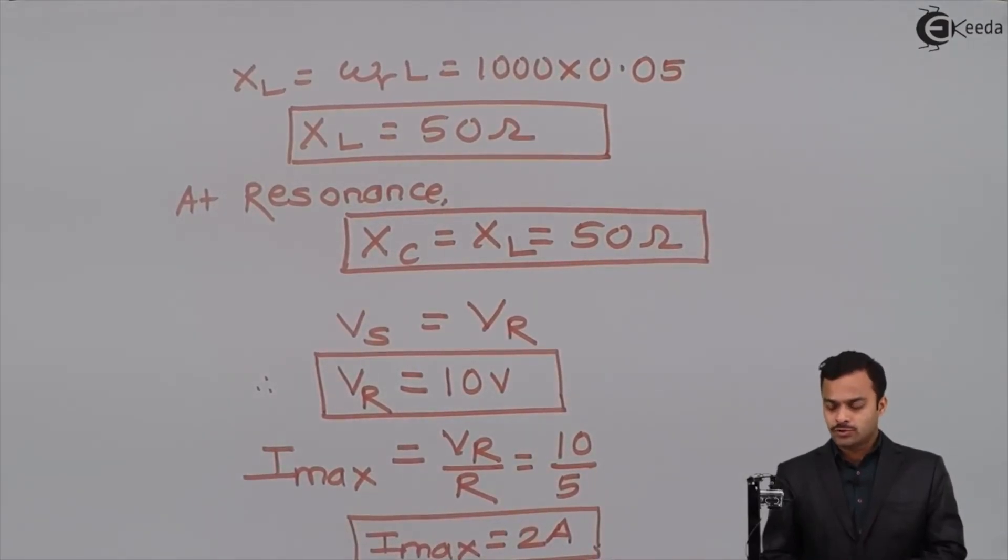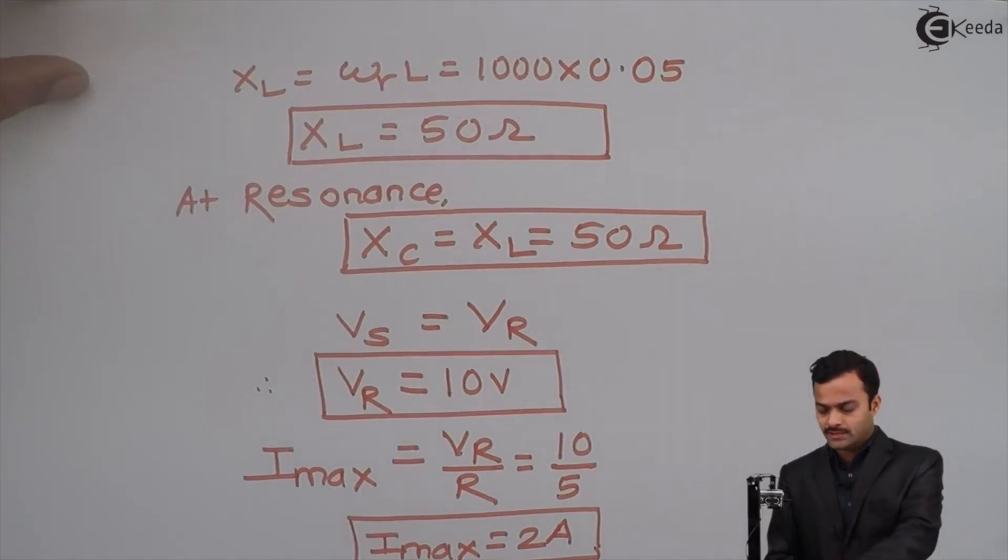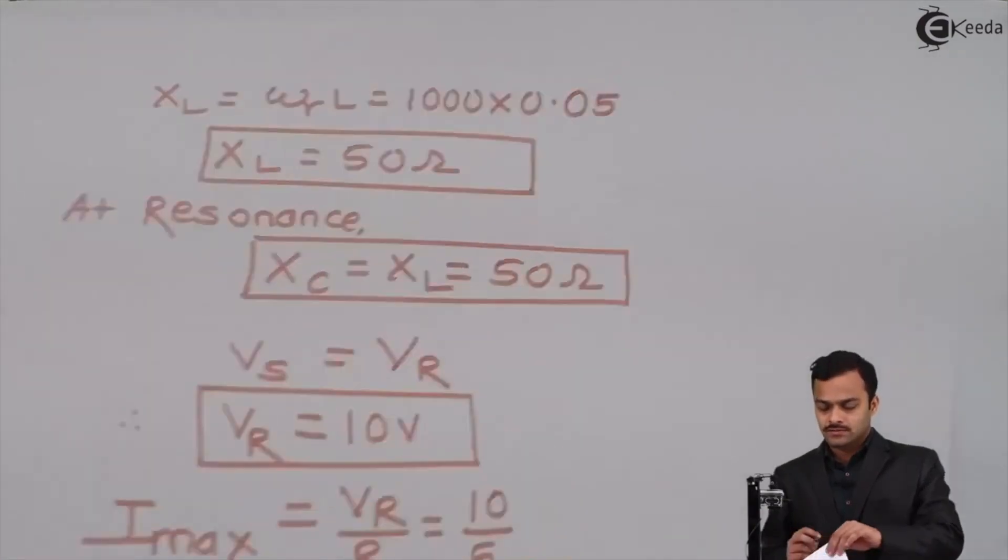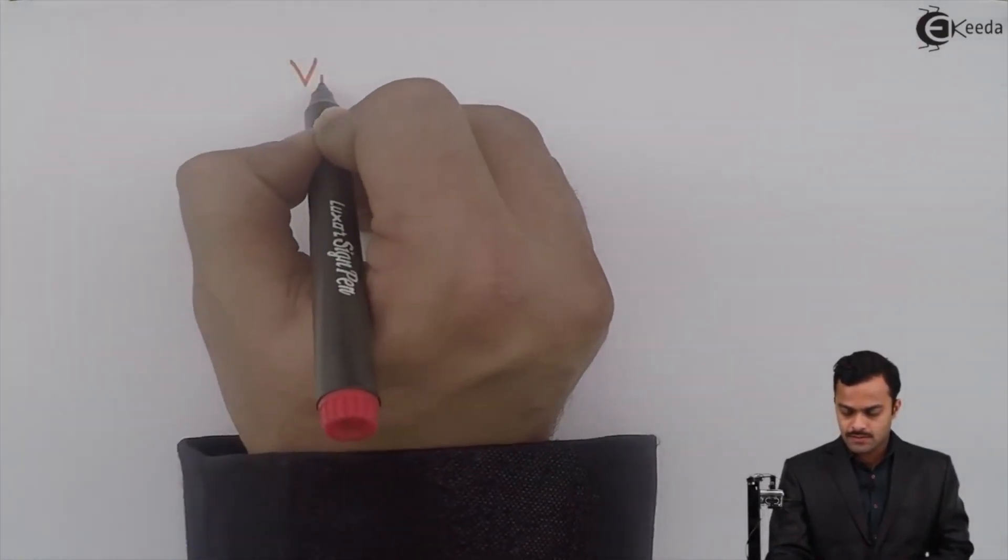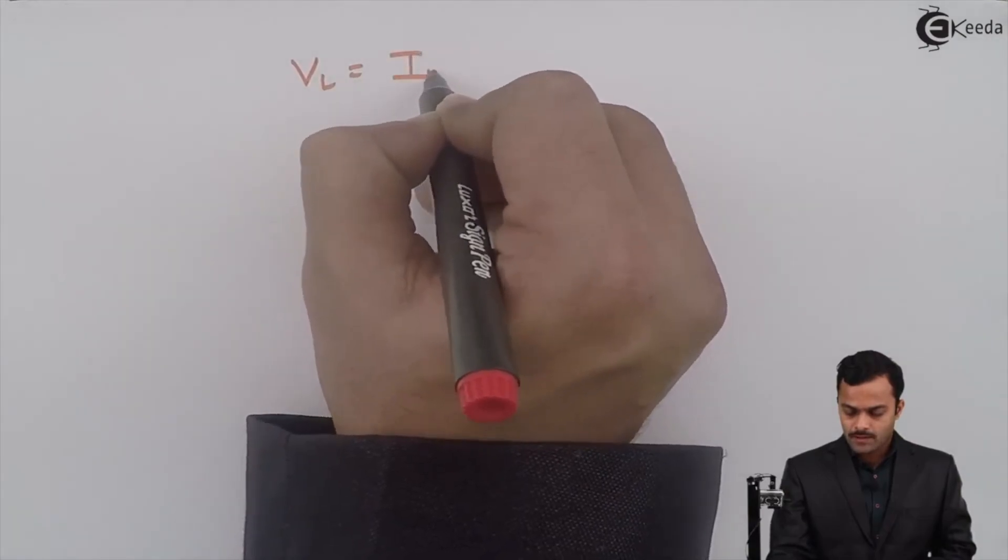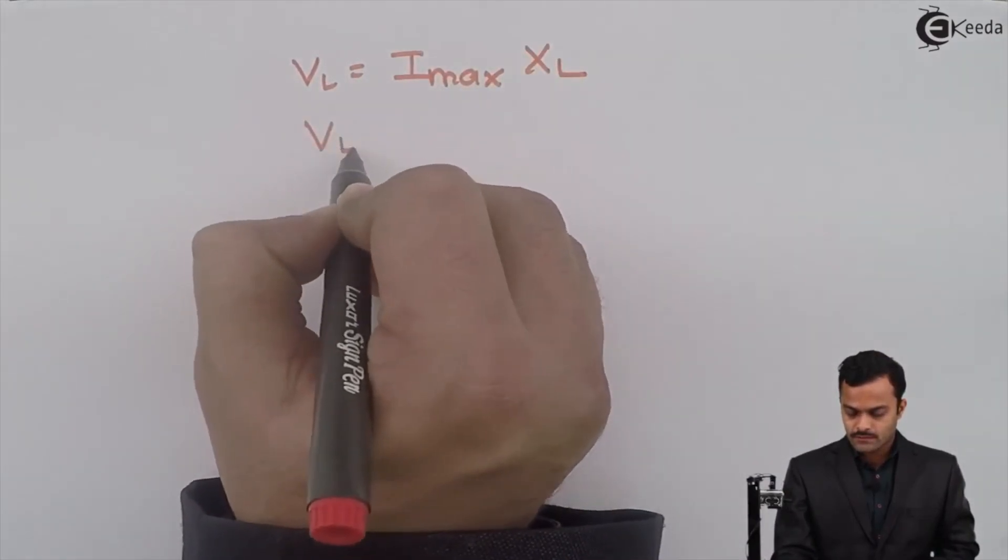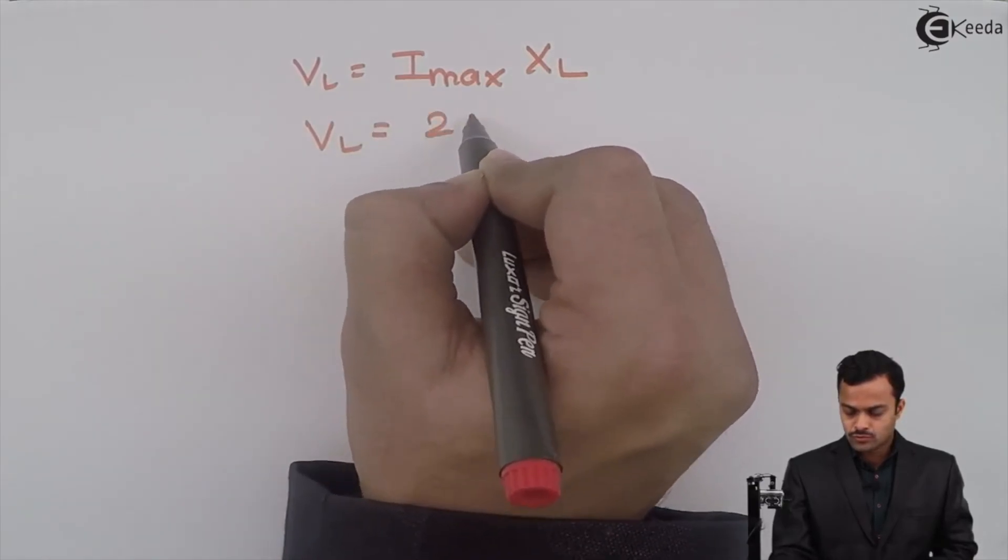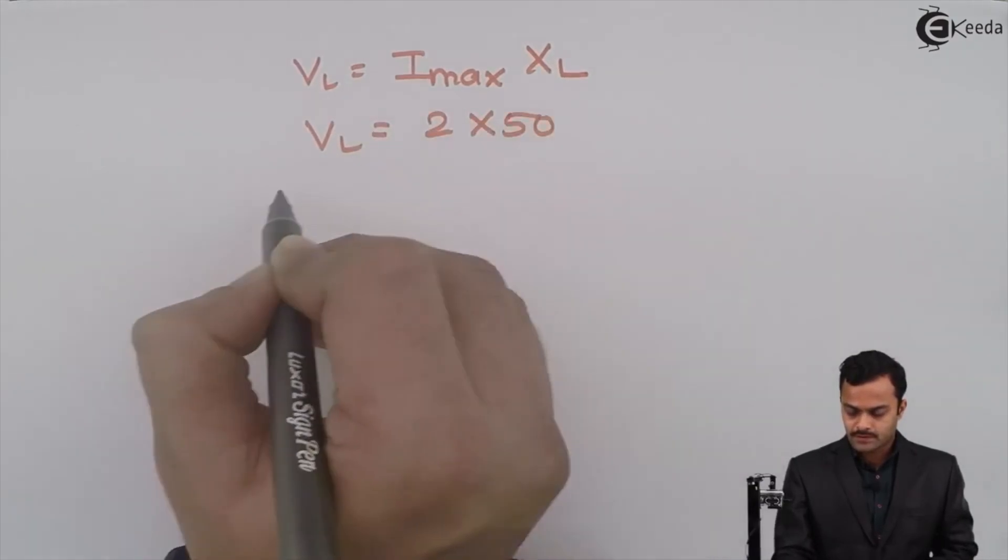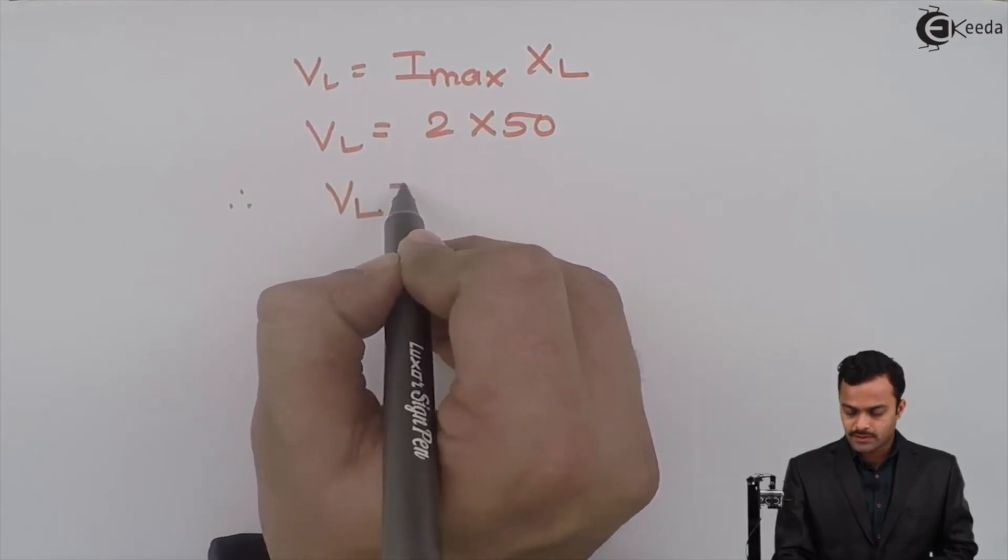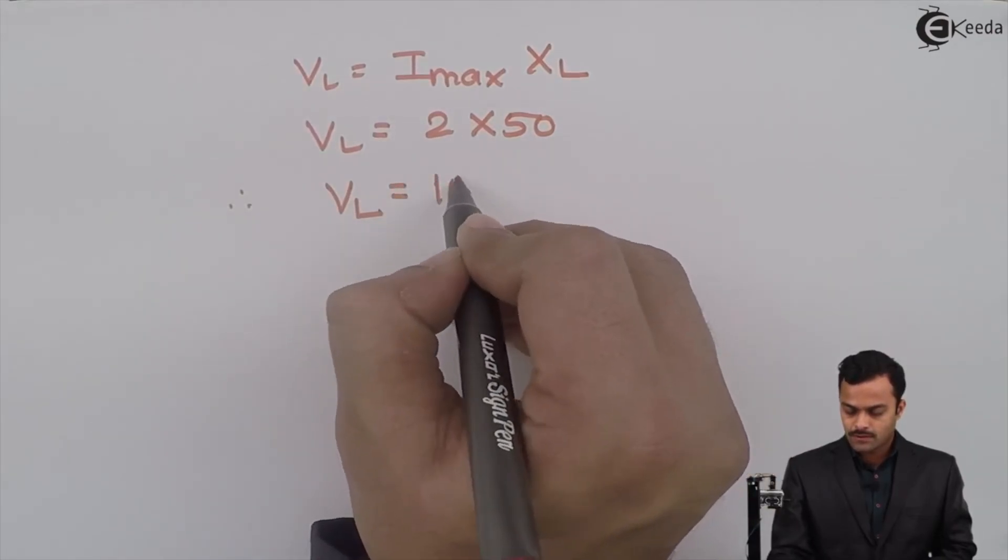That means this 2 ampere is going to flow through C and L giving rise to Vc and Vl. What is the value of Vc and Vl? Vl is nothing but 2 multiplied by 50. Voltage across inductor will be 100 volt.